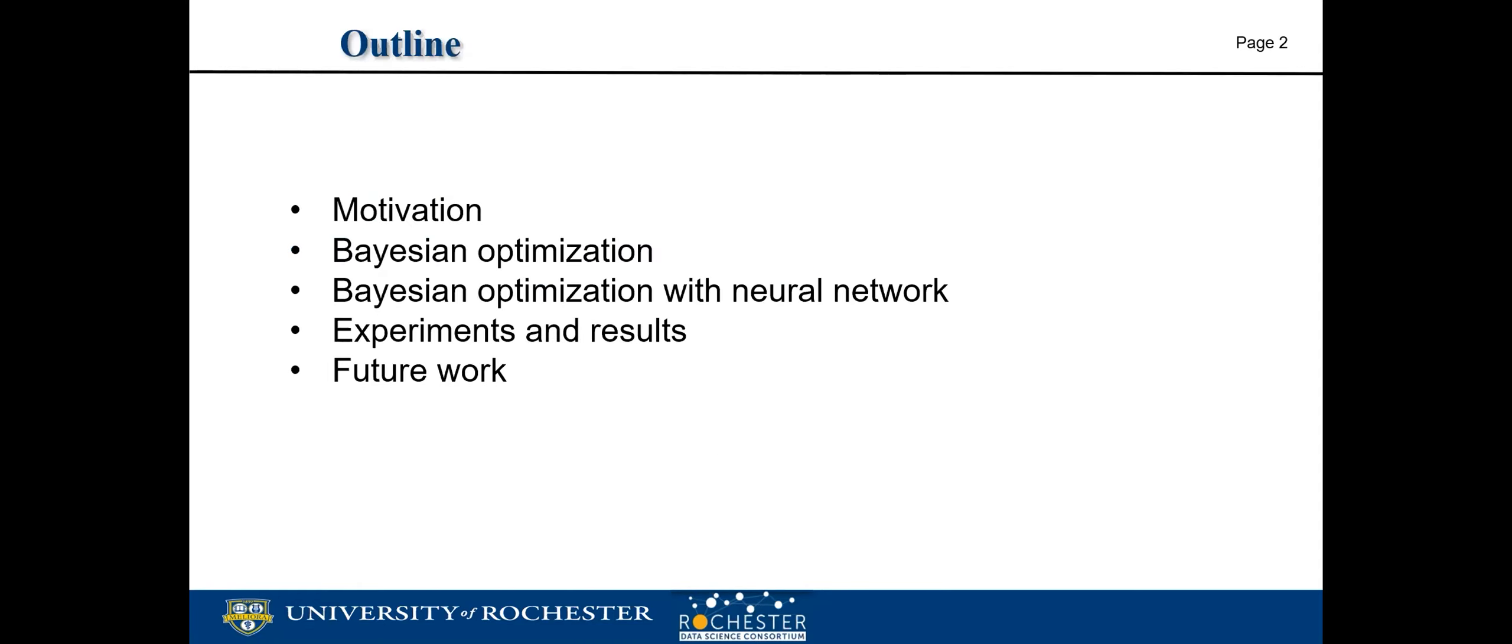Here is the outline of our work. I will firstly talk about our motivation to show why the research is important and deserves investigation. Then I will briefly introduce Bayesian optimization and the research based on Bayesian optimization and neural networks. After that, I will go through our method and discuss our experiments and results, and finally give some future research directions.